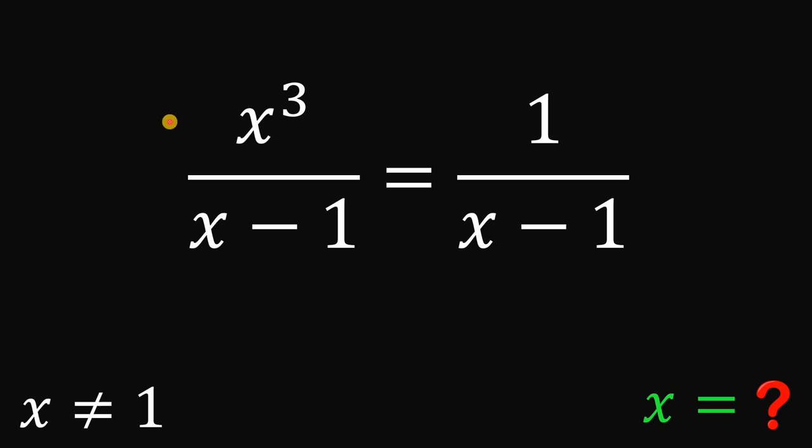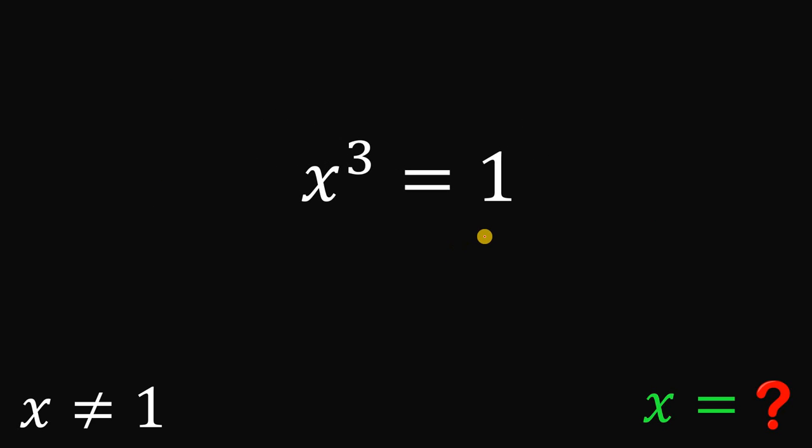Alright, so what we are going to do here is to multiply both sides by x minus 1. So the reason is to eliminate this denominator x minus 1. So our resulting equation becomes x cubed equals 1.